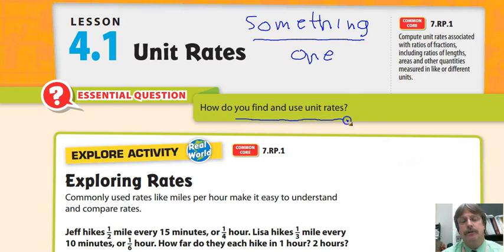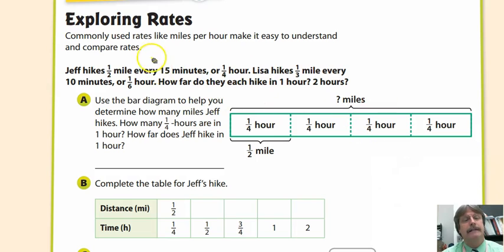How do we find and use unit rates? In the Explorer activity, we read the word problem: Jeff hikes a half mile every 15 minutes or quarter hour. Lisa hikes one third mile every 10 minutes or one sixth hour. How far do they each hike in one hour and two hours? We need to underline or highlight our information.